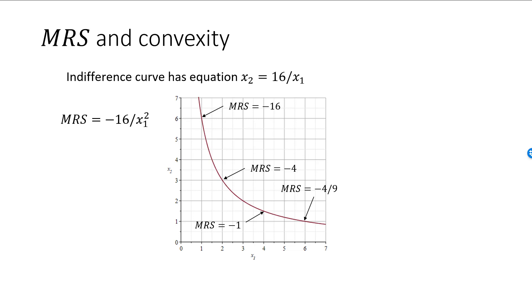This means that she will trade less and less of good 2 for more of good 1, which again makes sense as she now has less of good 2 and more of good 1.